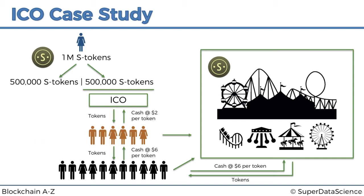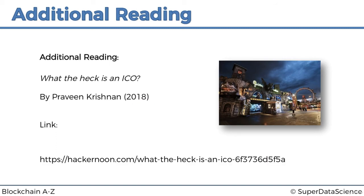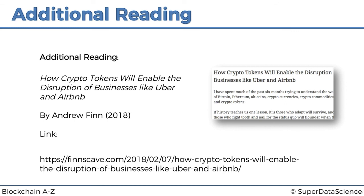That's how ICOs work. If you'd like to read this example in its original version, you can find it in the article 'What the Heck is an ICO?' by Praveen Krishnan on Hacker Noon or Medium — it's quite a good article, highly recommended. For a more in-depth example with more moving parts, another article I highly recommend is 'How Crypto Tokens Will Enable the Disruption of Businesses like Uber and Airbnb' by Andrew Finn, one of the co-creators of the blog Wait But Why, run by Tim Urban.